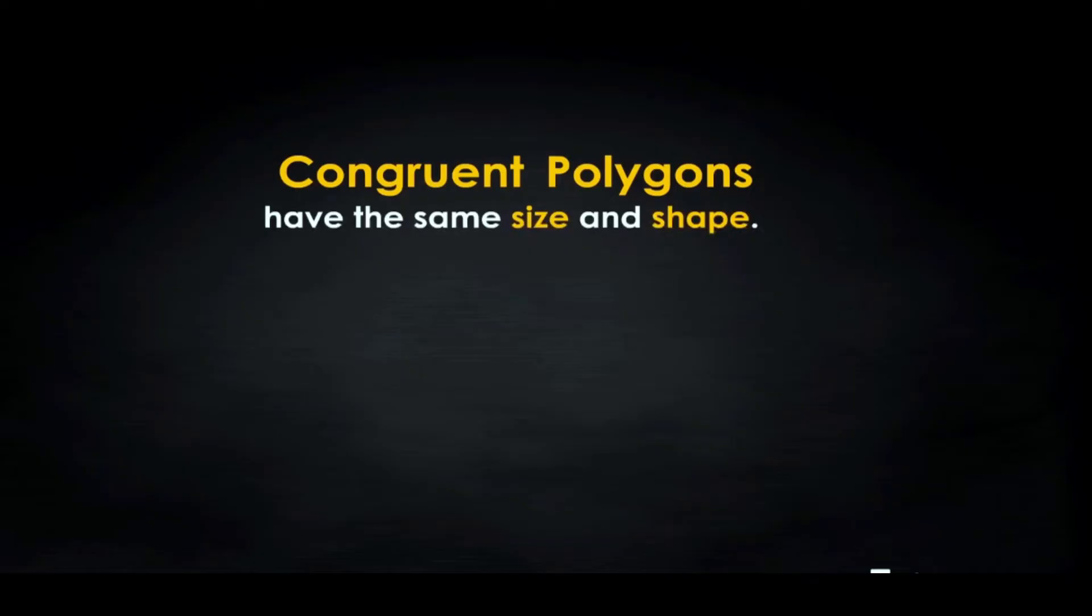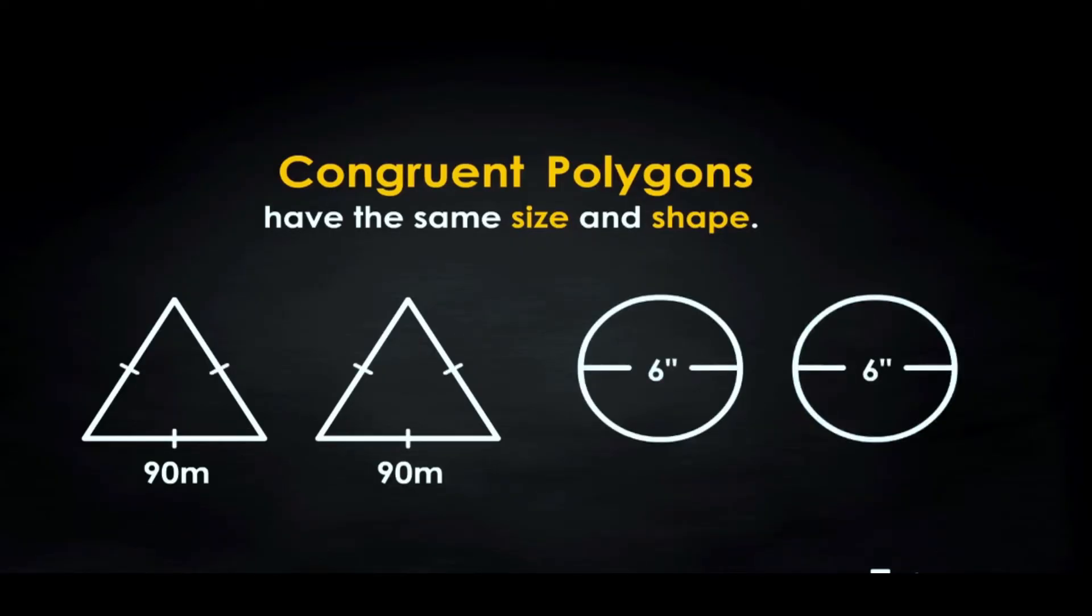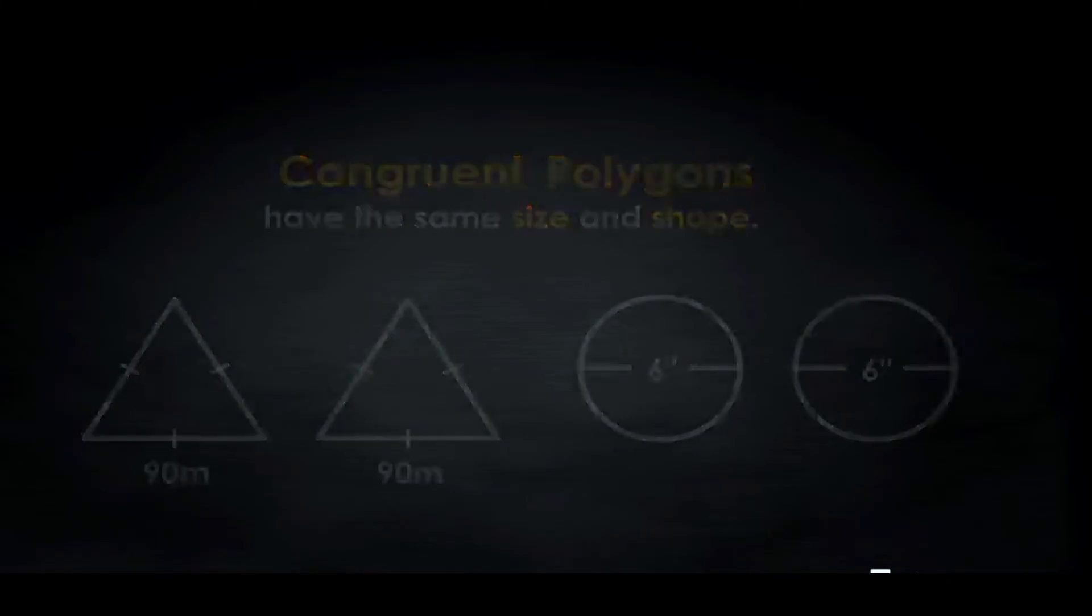Next, let's talk about being congruent. Polygons or any geometric shapes are congruent if they are the same size and shape. Two equilateral triangles each with one side 90 meters long are congruent. Two 6-inch circles are also congruent. In order to determine if geometric shapes are congruent, we need to learn about transformations.